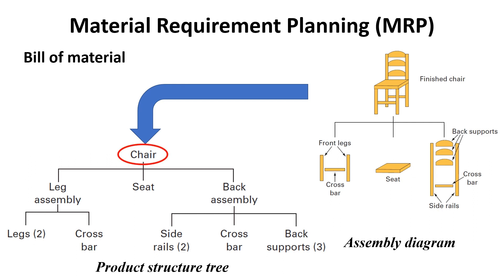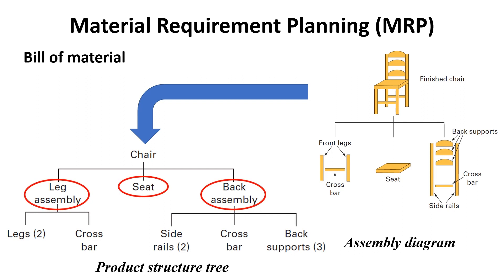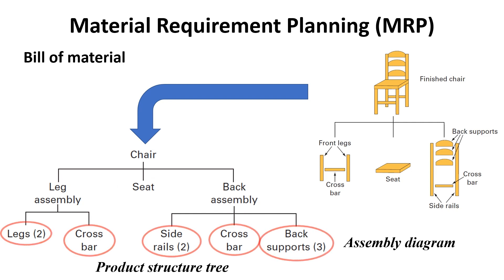The end item — in this case, the chair — is shown at the top of the tree. Just beneath it are the subassemblies, or major components, that must be put together to make up the end item. Beneath each major component are the necessary lesser components. At each stage moving down the tree are the components, parts, and materials needed to make one unit of the next higher item in the tree. A product structure tree is useful in illustrating how the bill of materials is used to determine the quantities of each of the ingredients needed to obtain a desired number of end items.